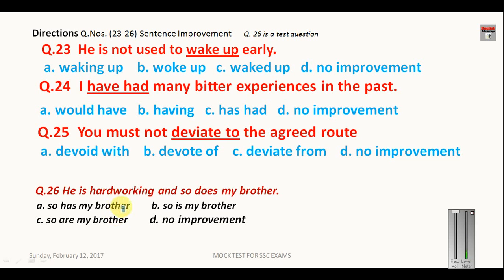Let us see the last set of questions. He is not used to. This is the sentence improvement part. So when you say I am not used to, he is not used to, she is not used to, it means you are talking about the habit. You are not in the habit of doing something. So these kind of structures are followed by -ing form of the verb. So here waking up will be the right answer. I have had many bitter experiences in the past. So this is the correct sentence. Have is helping verb and had is the third form. So this is the correct combination and this is correctly written here.